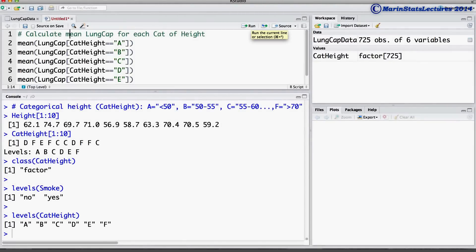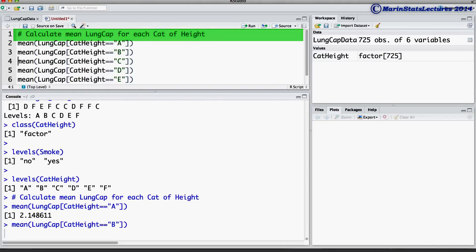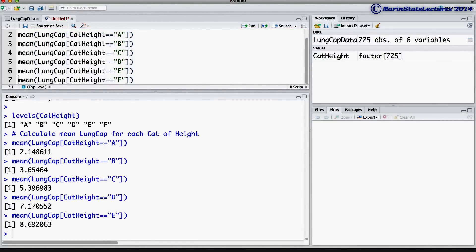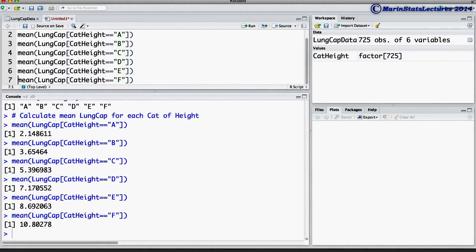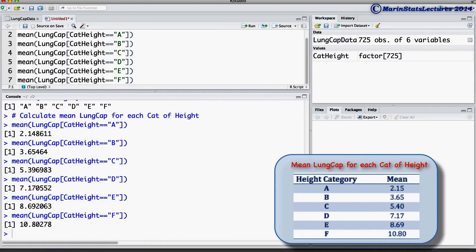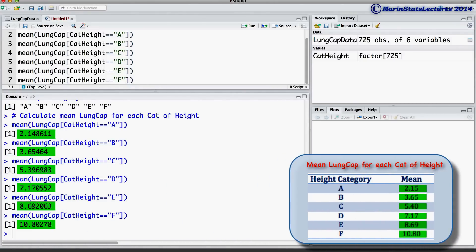I've already written some code to do this, so I'll go ahead and submit that. We'll calculate the mean lung capacity for each of the height categories. Here we are asking R to calculate the mean lung capacity only for those in height category A, and then the mean lung capacity only for those in height category B, and so on. Now let's keep an eye on those means so that we can compare these with the regression model that we're going to fit.